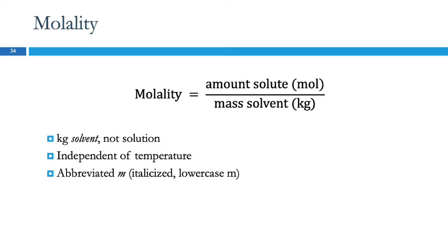Most aqueous solutions have way more water than solute, so here we're looking at the mass of the water. Where molarity was moles per liter of solution — which is mostly water — a liter is 1,000 milliliters, and a milliliter is roughly one gram for water, so a kilogram is the mass of one liter of water. So, molarity and molality numbers are going to be really similar. The useful thing about molality is it doesn't depend on temperature, because the mass of the solvent doesn't depend on temperature.